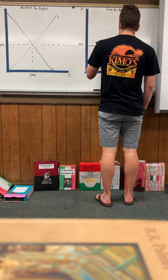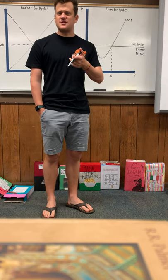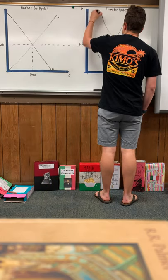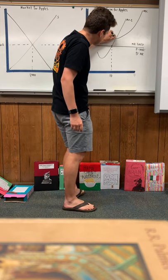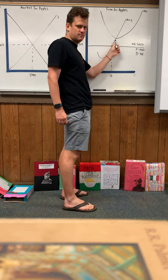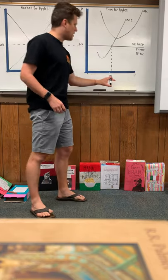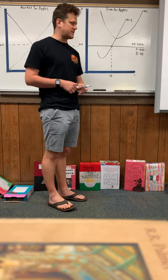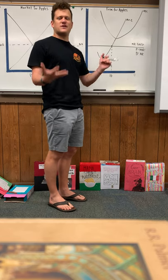Next we add the average total cost curve, which is parabola-shaped and crosses MC at ATC's lowest point. We label it ATC. We don't really care about where it crosses MC for this problem — the only quantity we care about is 10, because that's how many bushels this firm is producing based on MC = MR.